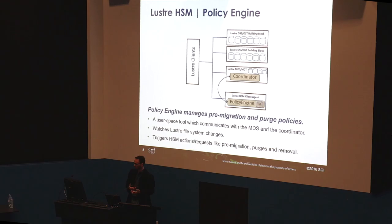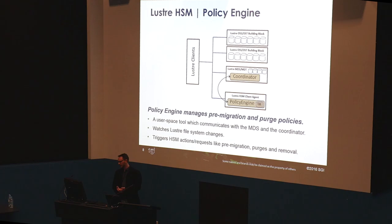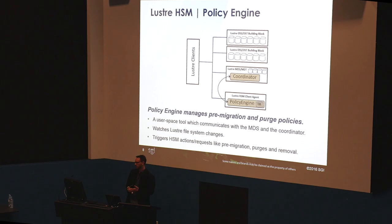The policy engine — Robin Hood — runs on a separate system, managing pre-migration and purge policies. You can also use the policy engine for other things; some sites use it to find candidates on scratch file systems that haven't been accessed for a period of time and remove them. It's a changelog subscriber with the Lustre file system. When it initially runs it needs to scan the whole file system, but as changes occur it keeps an eye on things and triggers actions as required.